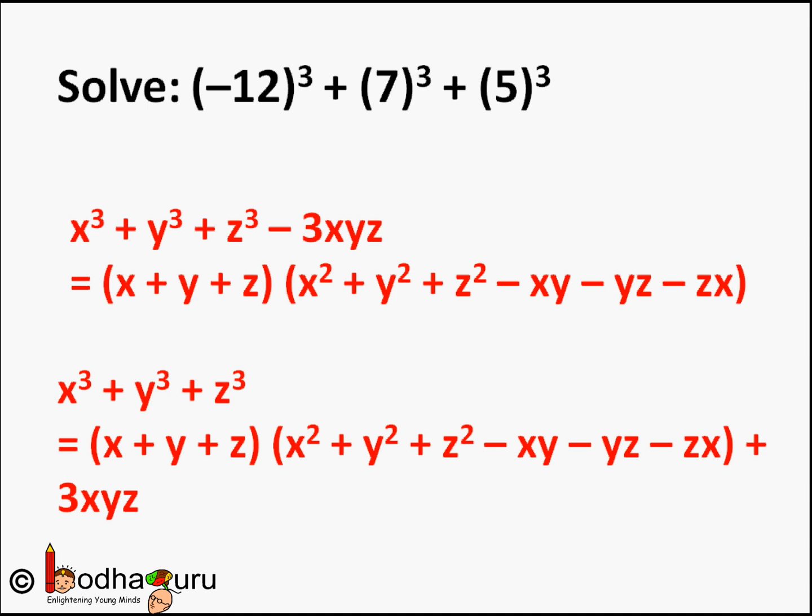So x³ + y³ + z³ becomes (x + y + z)(x² + y² + z² - xy - yz - zx) + 3xyz. The 3xyz comes to the other side.